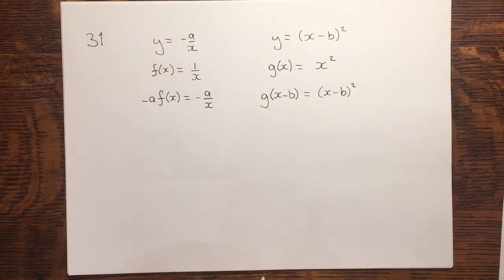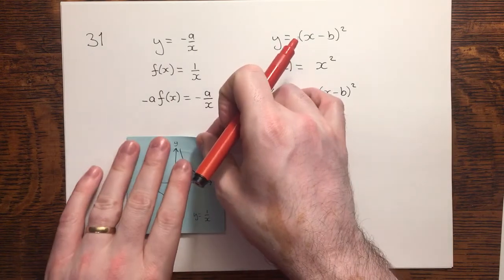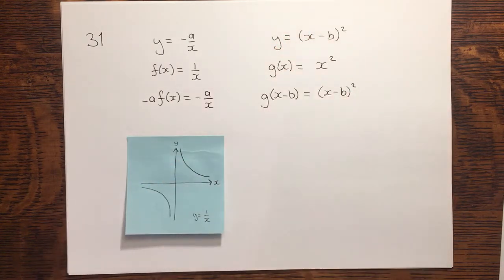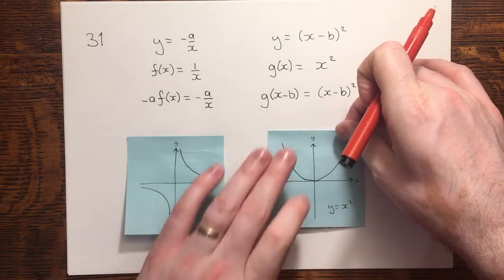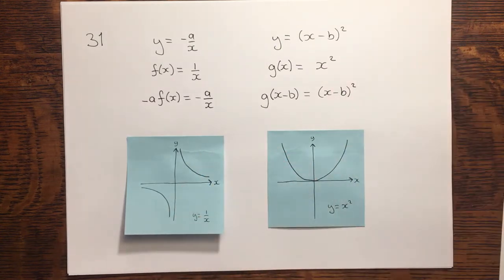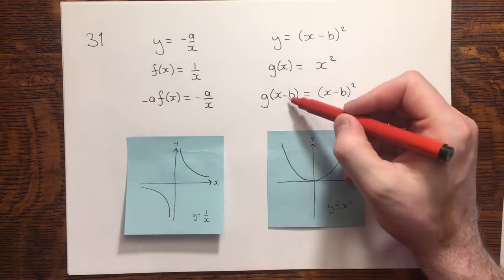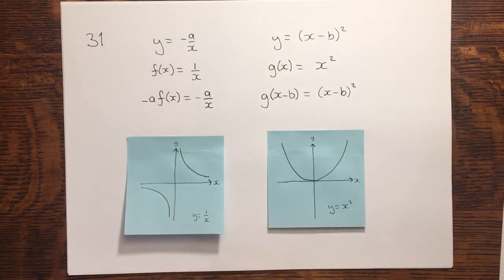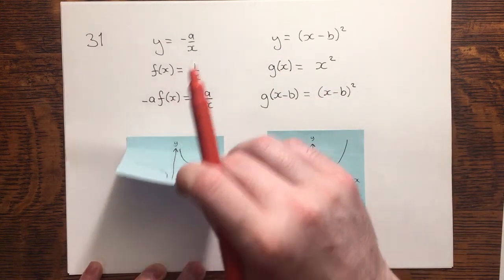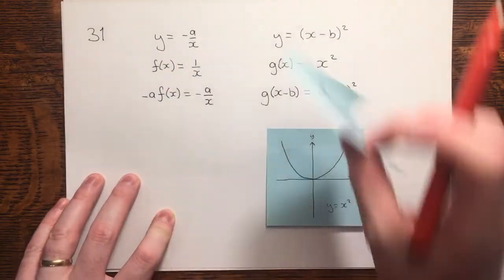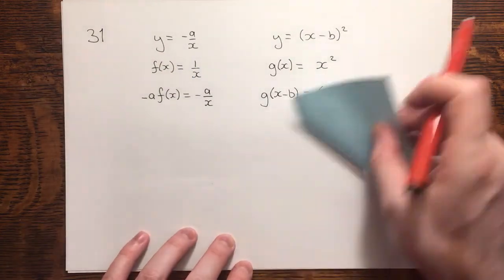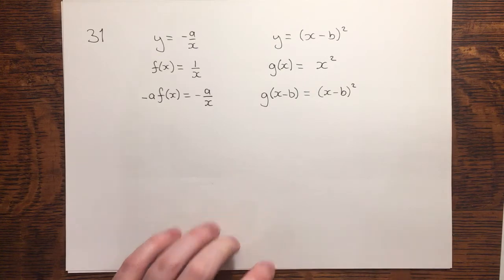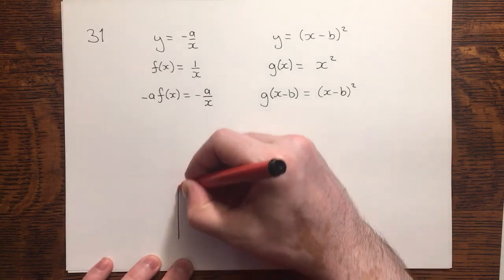Now that's useful, because if we start off with the well-known graphs, y equals 1 over x, or y equals x squared, we can transform these using these transformations to get what we're after. First of all, it says in the question to sketch these on the same axes.